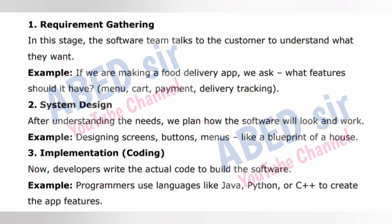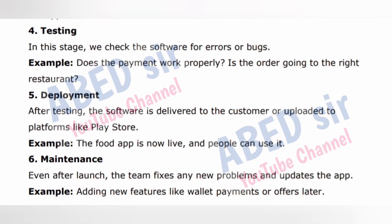Stage three: Implementation, or coding. Now developers write the actual code to build the software. Example: programmers use languages like Java, Python, or C++ to create the app features. Stage four: Testing. In this stage, we check the software for errors or bugs. Example: does the payment work properly? Is the order going to the right restaurant?